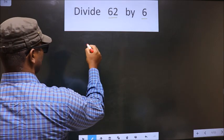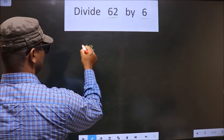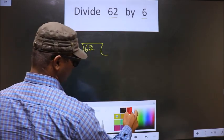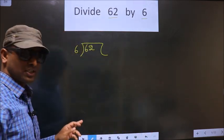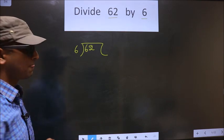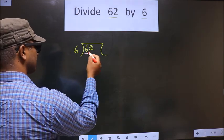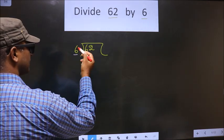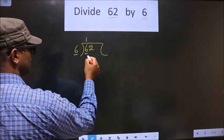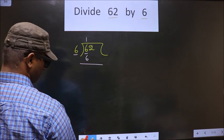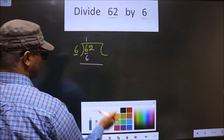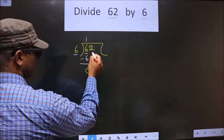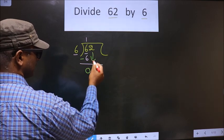See, that is 62 divided by 6. Now here we have 6, and here also 6. When do we get 6 in the 6 table? 6 once is 6. Now we subtract, so we get 0. Now we bring this number down, that is 2.